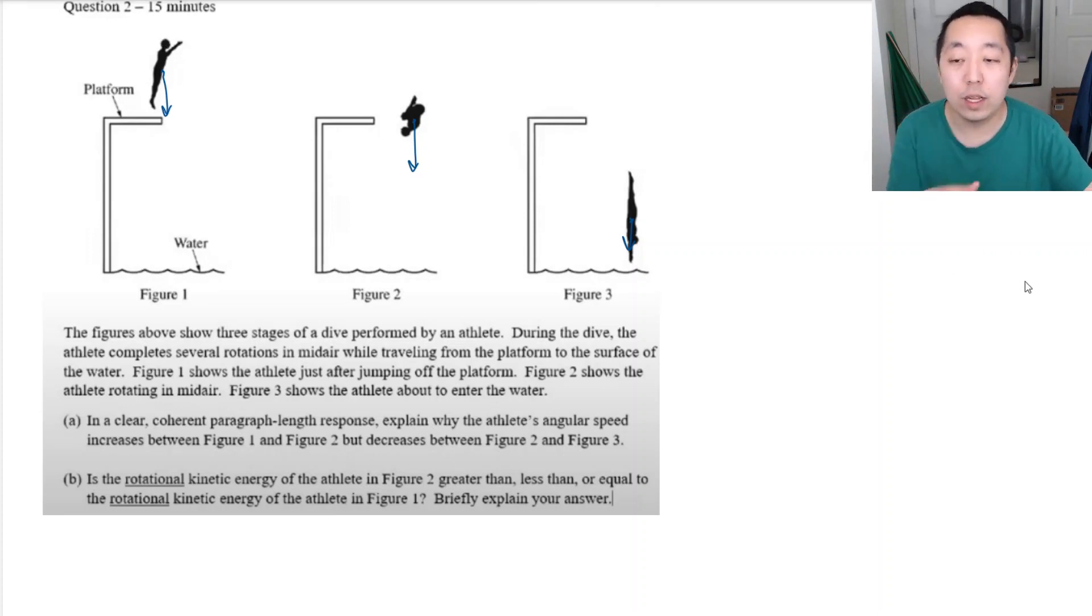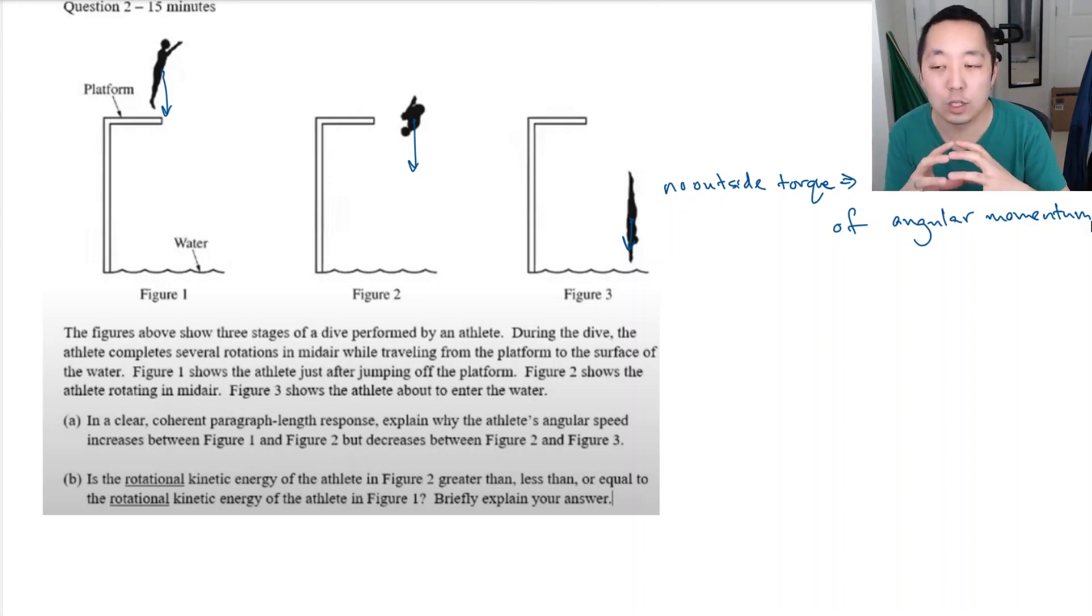Okay. What else can it be? Well, if there's no outside torque on the system, right? Then you need to be thinking no outside torque means conservation of angular momentum. That is a criteria for conservation of angular momentum. Technically, angular momentum is always conserved. But that depends if you include the entire universe of your system, right?